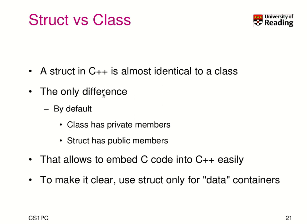We want to talk about the difference between struct and class. In C++, a structure is almost identical to a class. They made it this way to make C and C++ mostly compatible, so that you can use C code and compile it with C++ almost seamlessly.